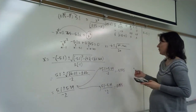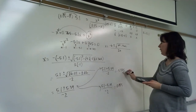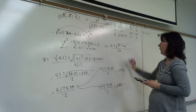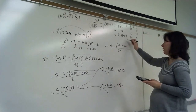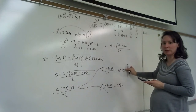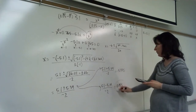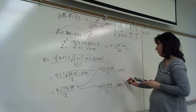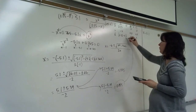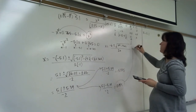Which answer makes sense in the ICE table? If we plug in a negative value we get nonsense — we can't have a negative concentration — so x = 0.145 is the answer we use and plug back into the ICE table.